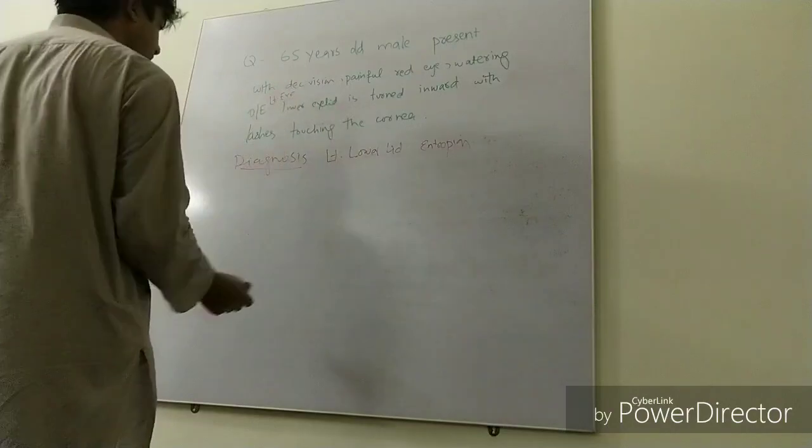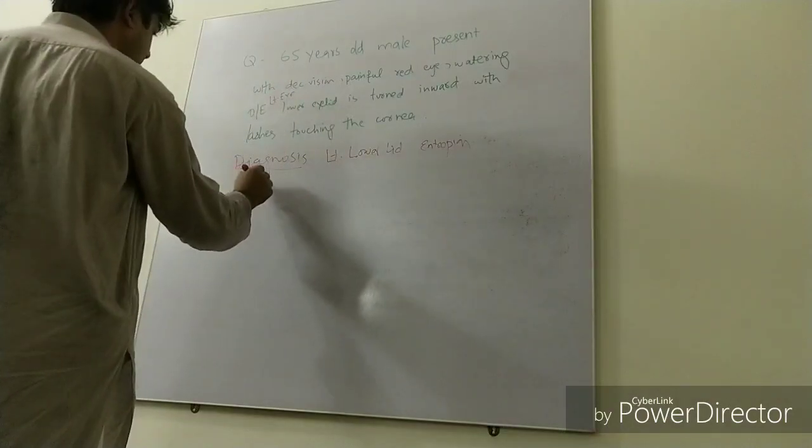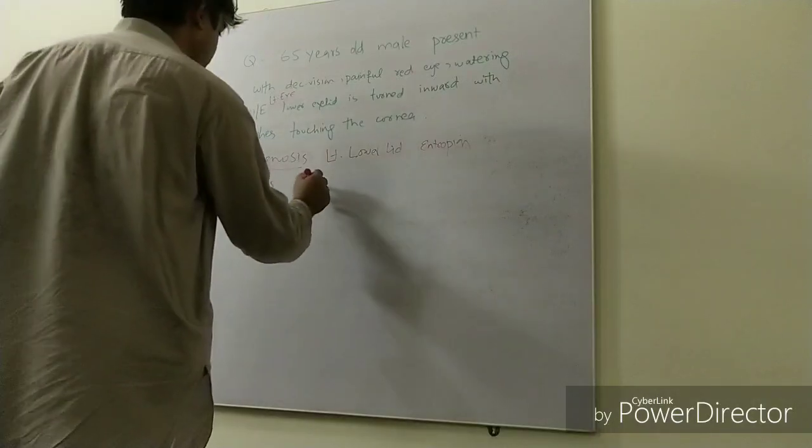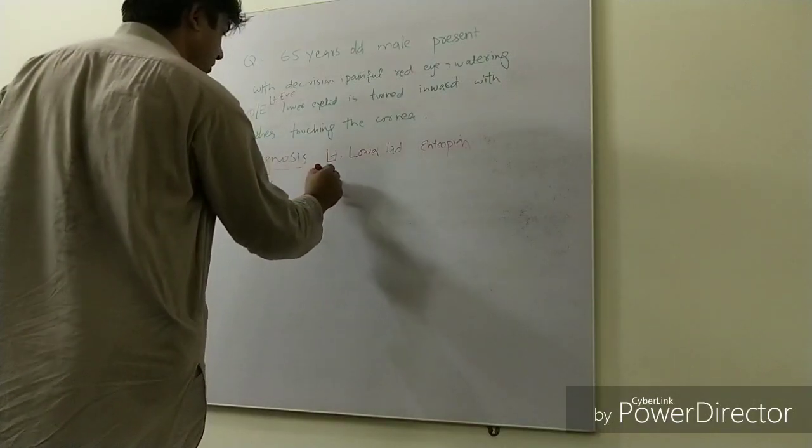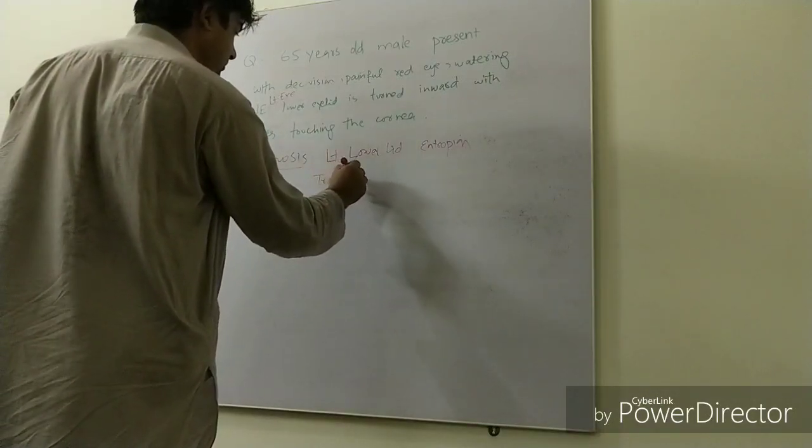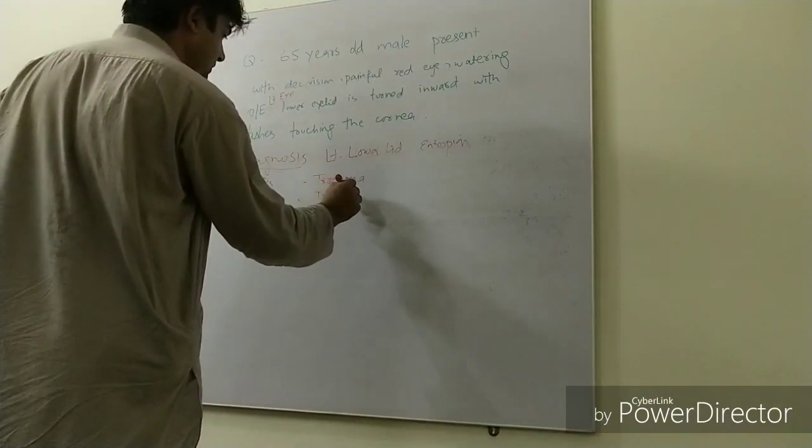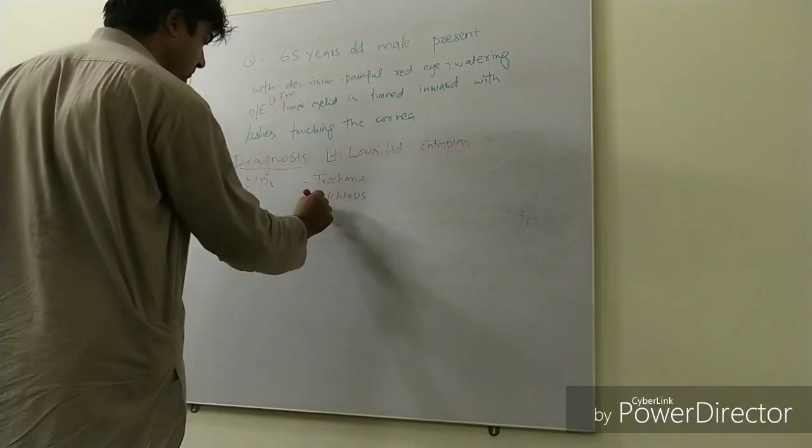Though that is a difficult question, you should recall the conditions in which the lashes touch the cornea. Trachoma can be included in the differentials, and then they ask you about the different types.